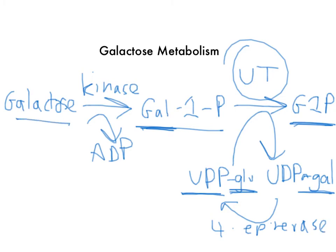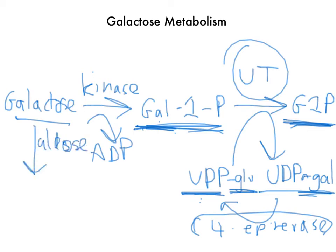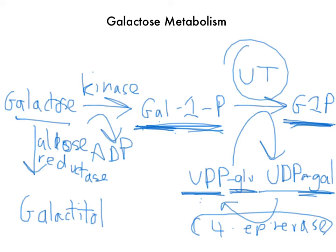Let's review the pathway again. You have galactose, which uses galactokinase to be trapped in the cell as galactose-1-phosphate. Then using uridyltransferase — along with UDP-glucose — it makes glucose-1-phosphate and also UDP-galactose. We can go back from UDP-galactose to UDP-glucose using 4-epimerase. And keep in mind that galactitol, produced by aldose reductase, creates high osmotic pressure inside the cell.